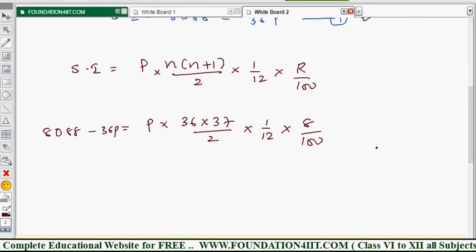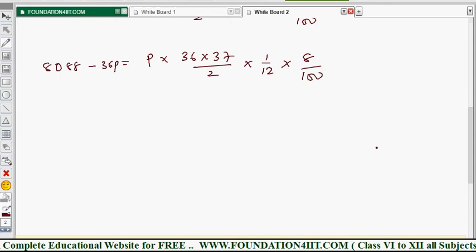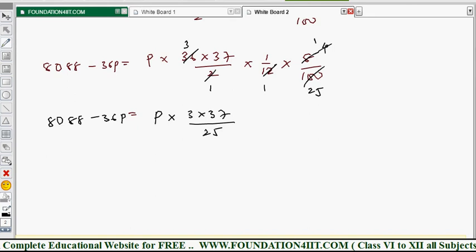Now if you simplify, you will get the value of P. Then you can simplify this right side and you can cancel which is possible here. 12, 1, so 12, 3 into 36. And cancel more. 2, 1 into 2, 4 into 8. And 4, 1 into 4, 25 into 100. So after cancellation, remaining values you write. So P into 3 into 37, there is no numerator more, divide by 25. 3 into 37 divided by 25. And this side is 8088 minus 36P.